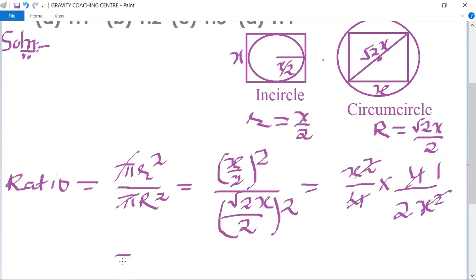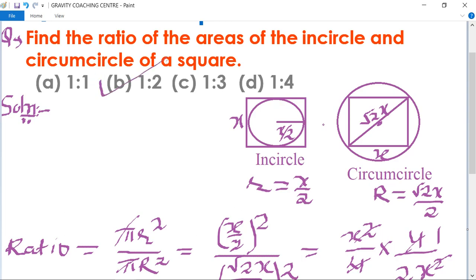So it equals 1 upon 2, means 1 ratio 2. Option B is the right answer.